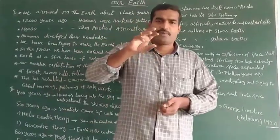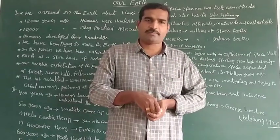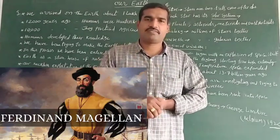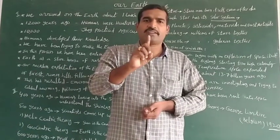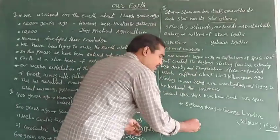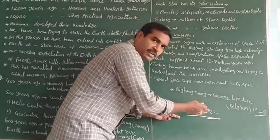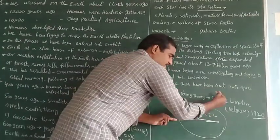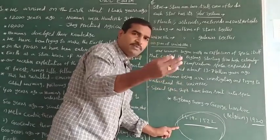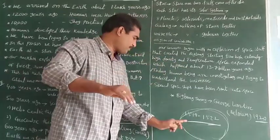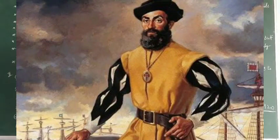Who said the Earth was round with an experiment? That was Ferdinand Magellan. He started from Spain and sailed from 1519 to 1522. Finally, he started from Spain and again reached the same place, proving that the Earth is round. Ferdinand Magellan belonged to Portugal.